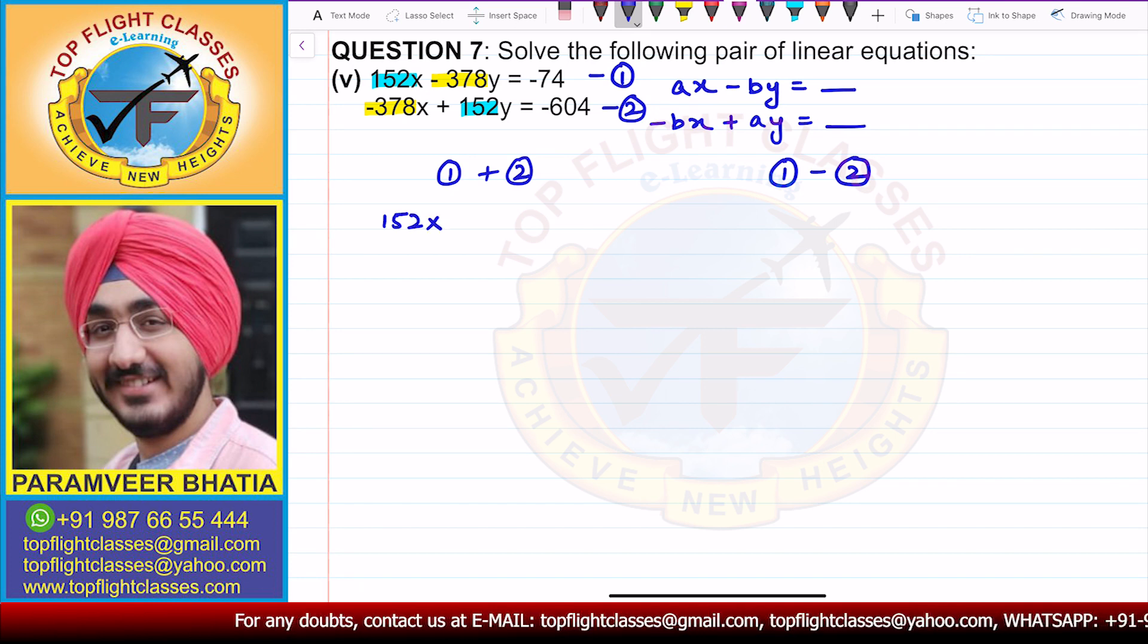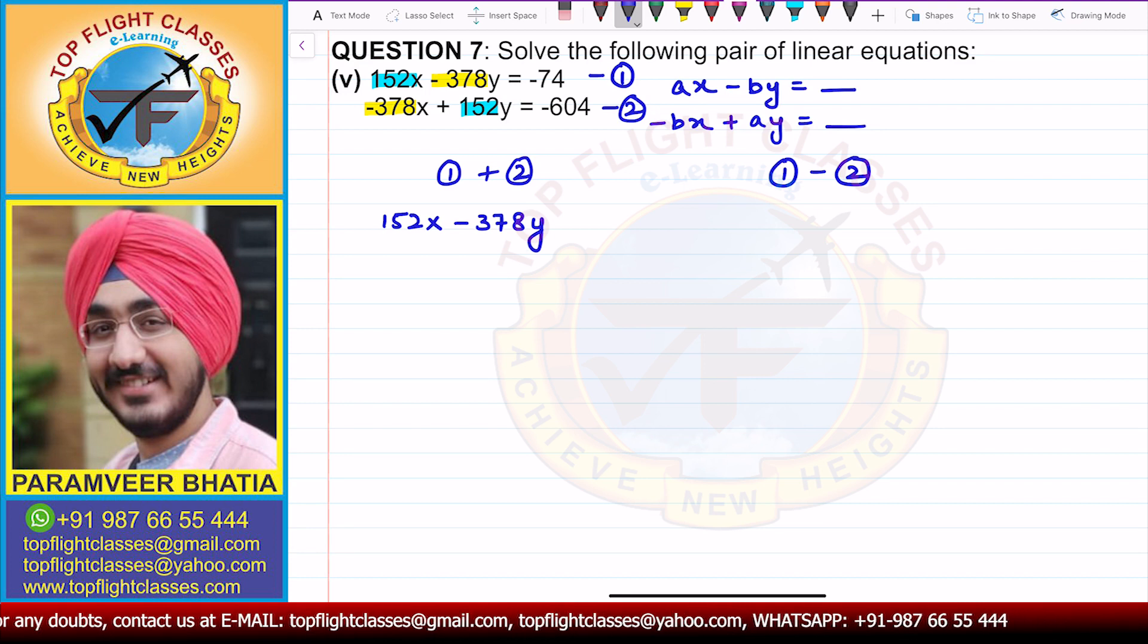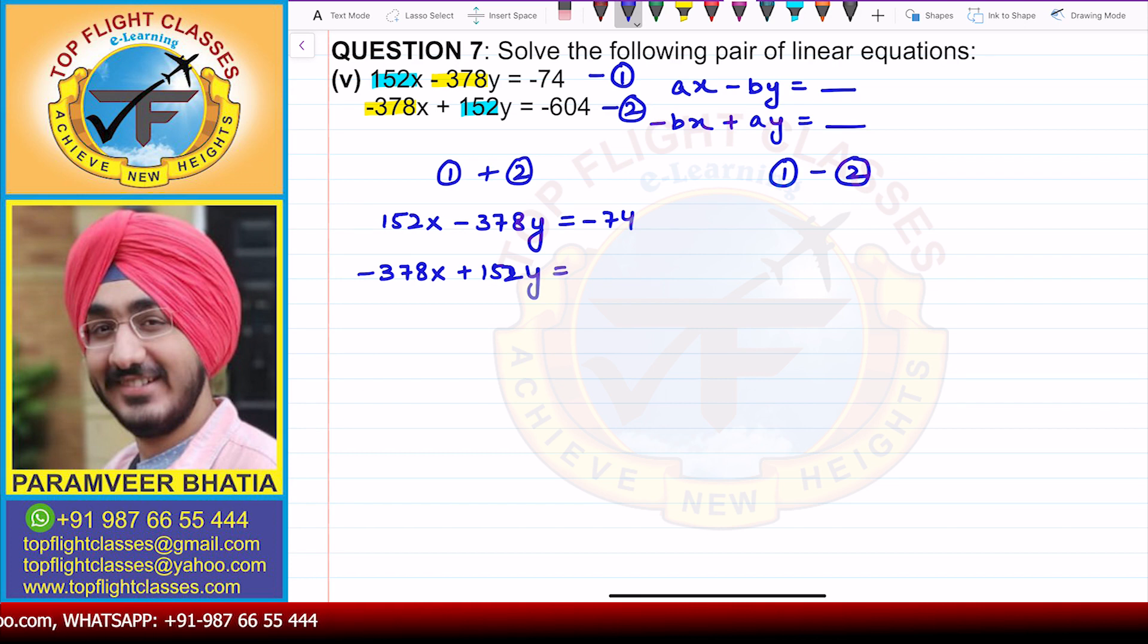I will get 152x - 378y = -74. And the second equation is -378x + 152y = -604. So when I will add the two equations, from here, what I will get is,